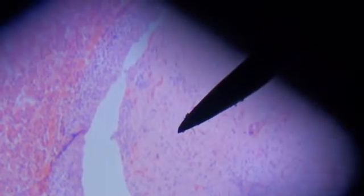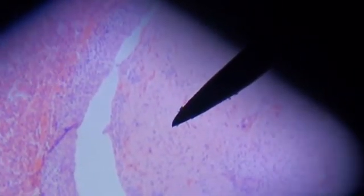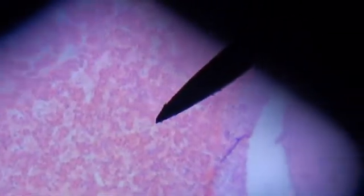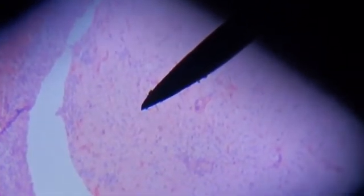Right here we have the pituitary gland or hypophysis. You can tell the difference in color. This area where the arrow is pointing is the posterior portion of the hypophysis.